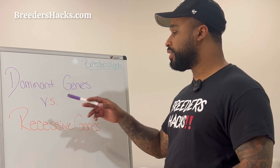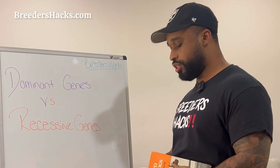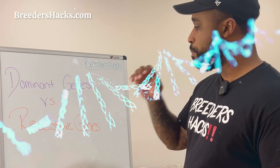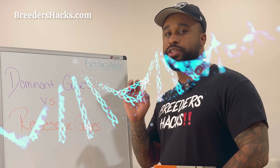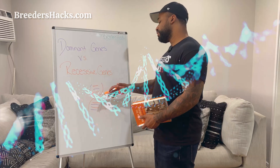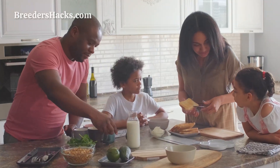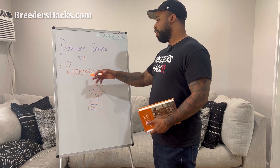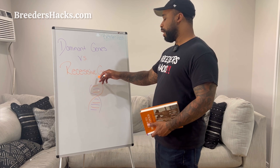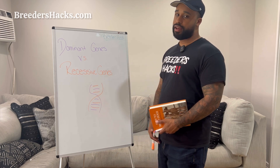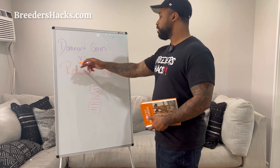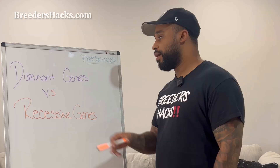Before we get into dominant and recessive genes, you need to know what genes are. To make it very simple and quick: we get our DNA from our mother and our father. The genes are the DNA combinations that we get from our parents, some being dominant, some being recessive.